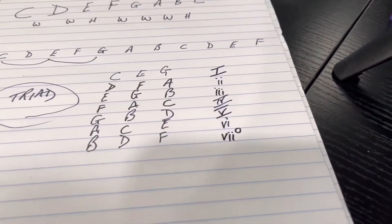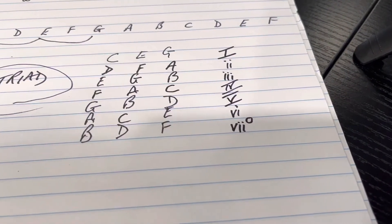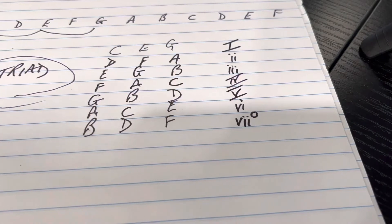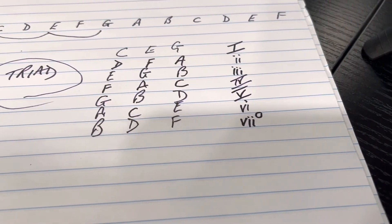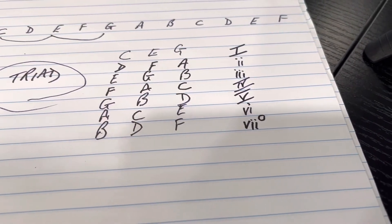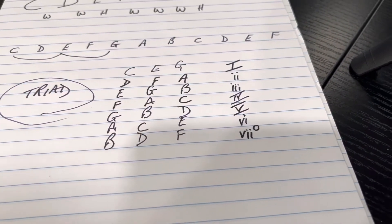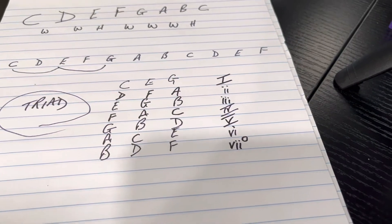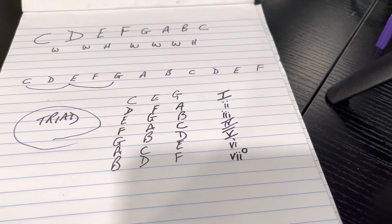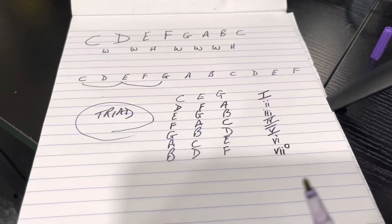So as you can see, the first chord, the fourth chord and the fifth chord are all major. The second chord, the third chord and the sixth chord are all minor and the seventh chord is diminished. And that is the triad pattern for any major key.